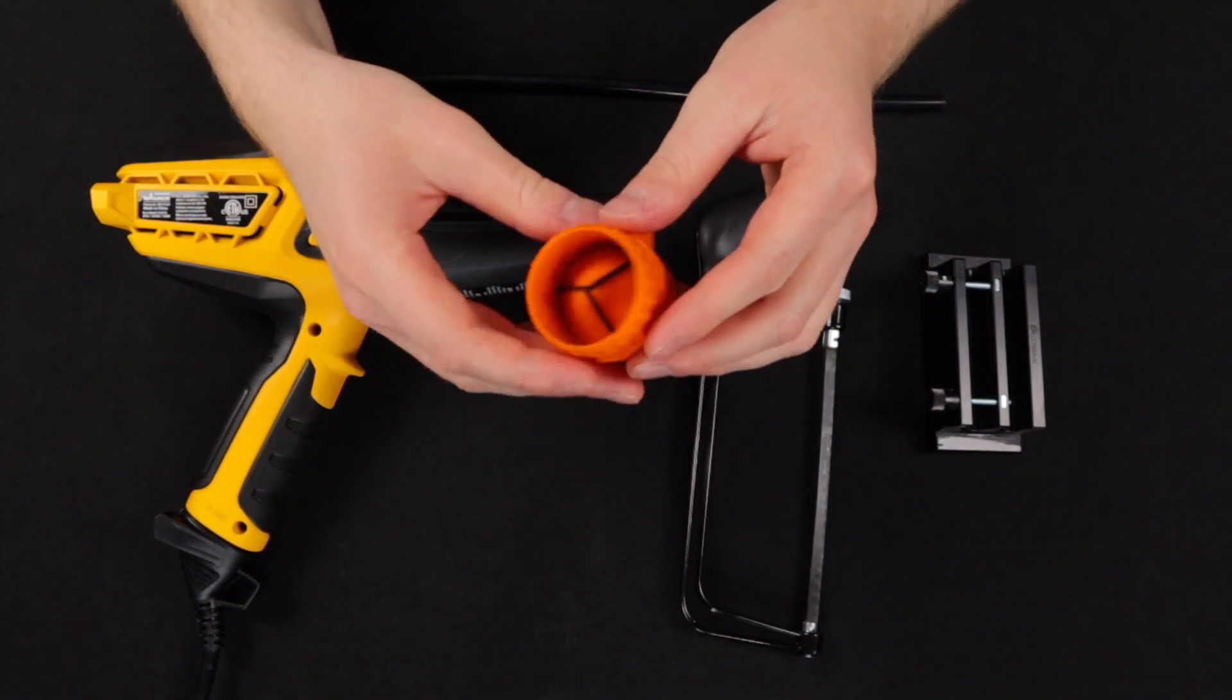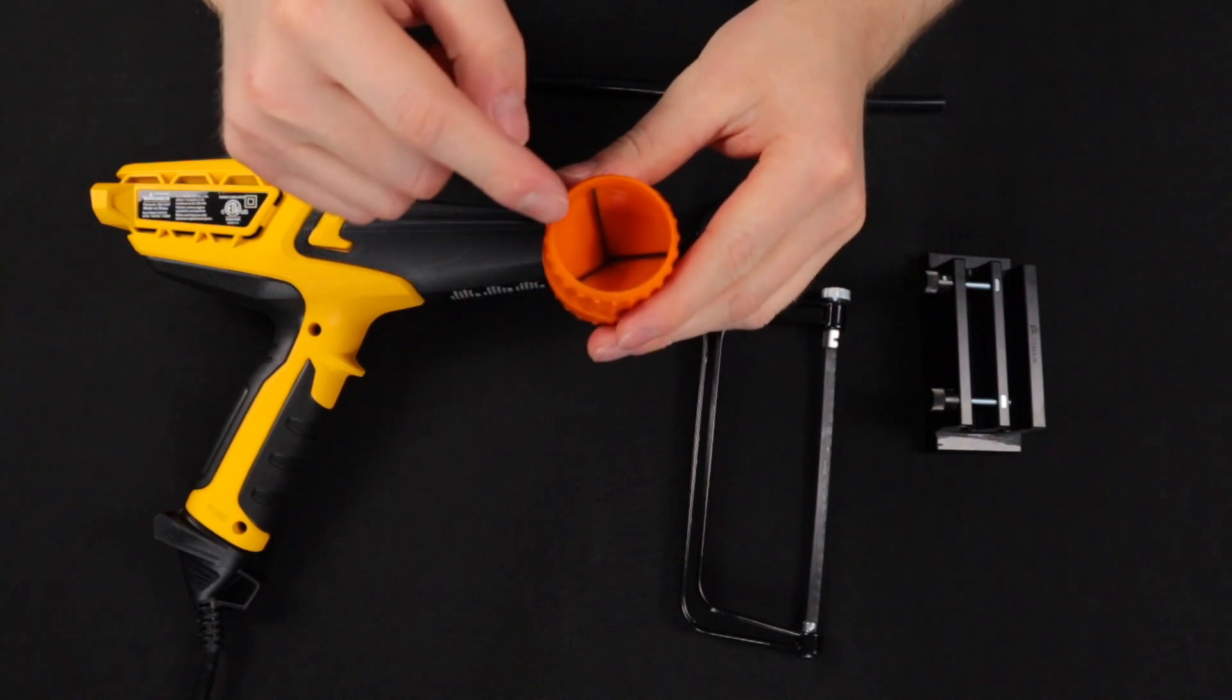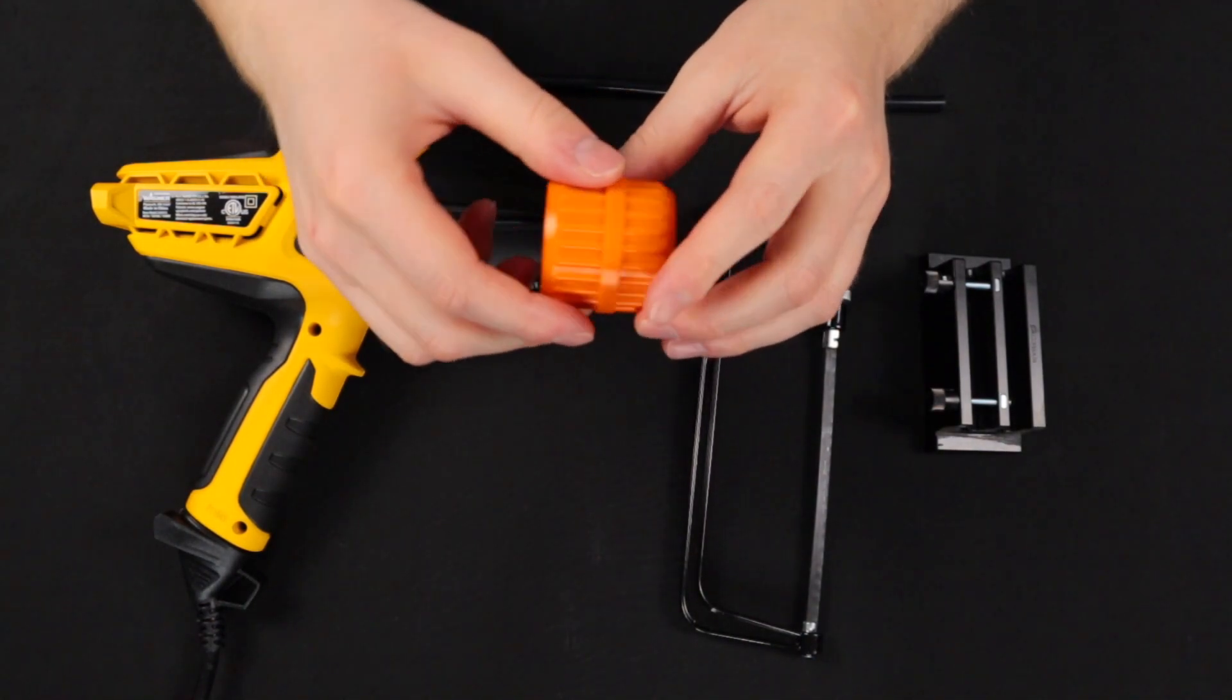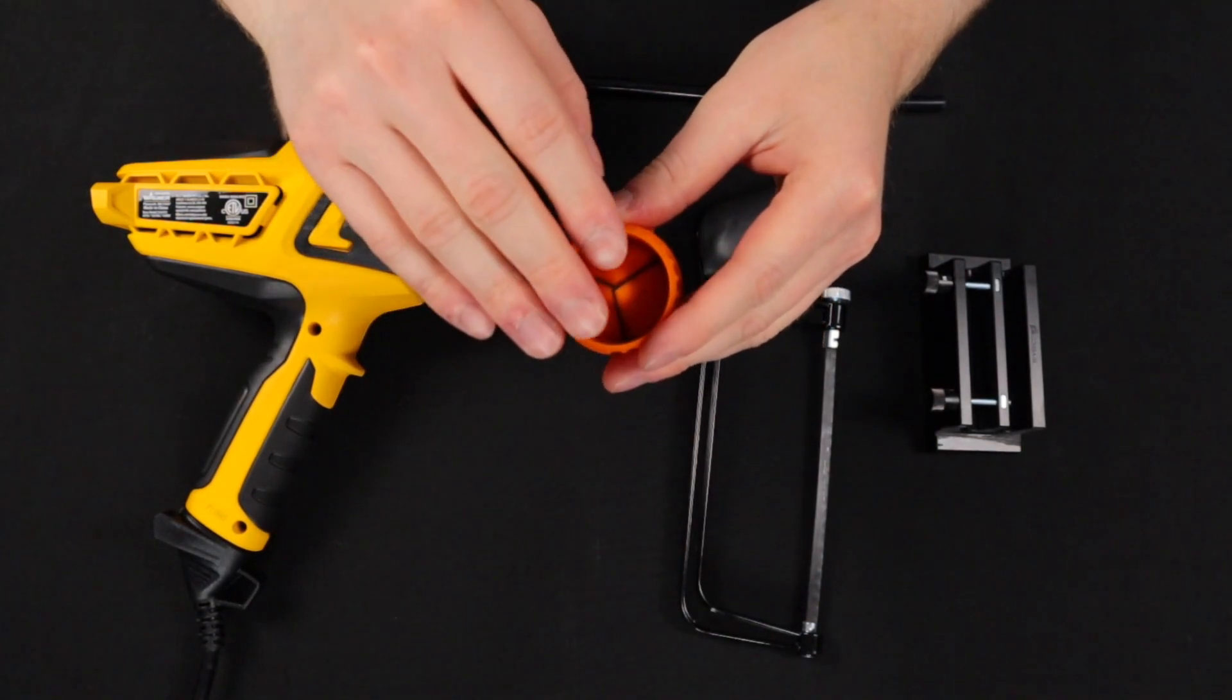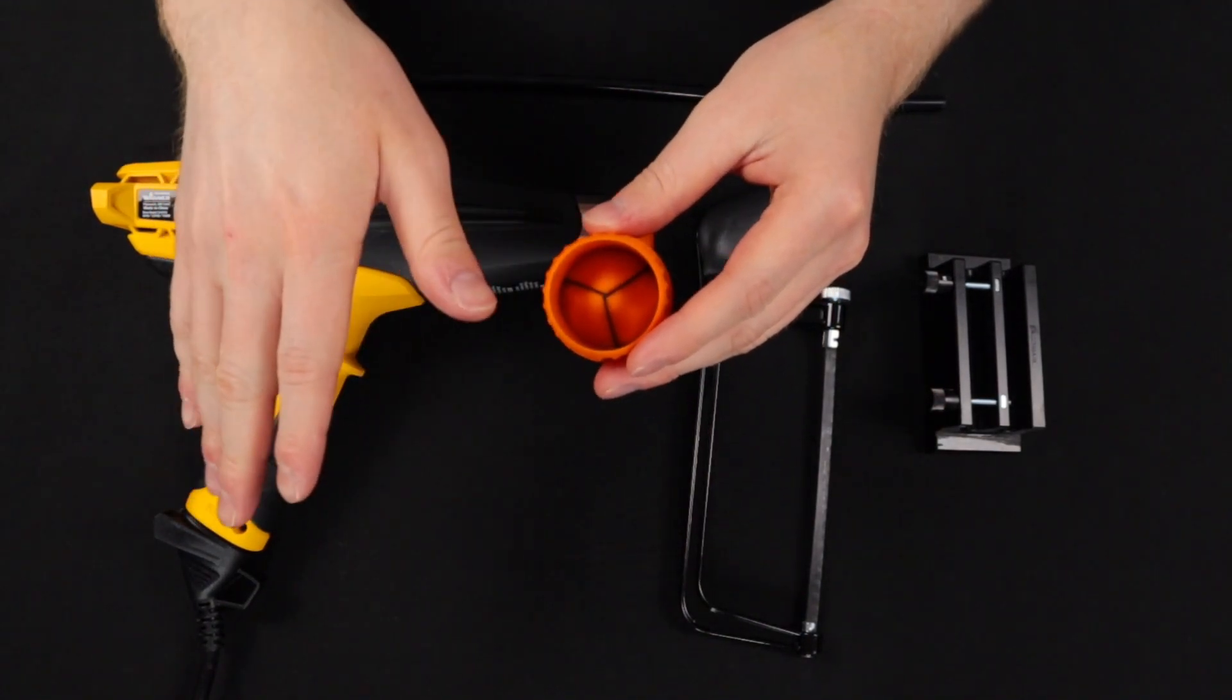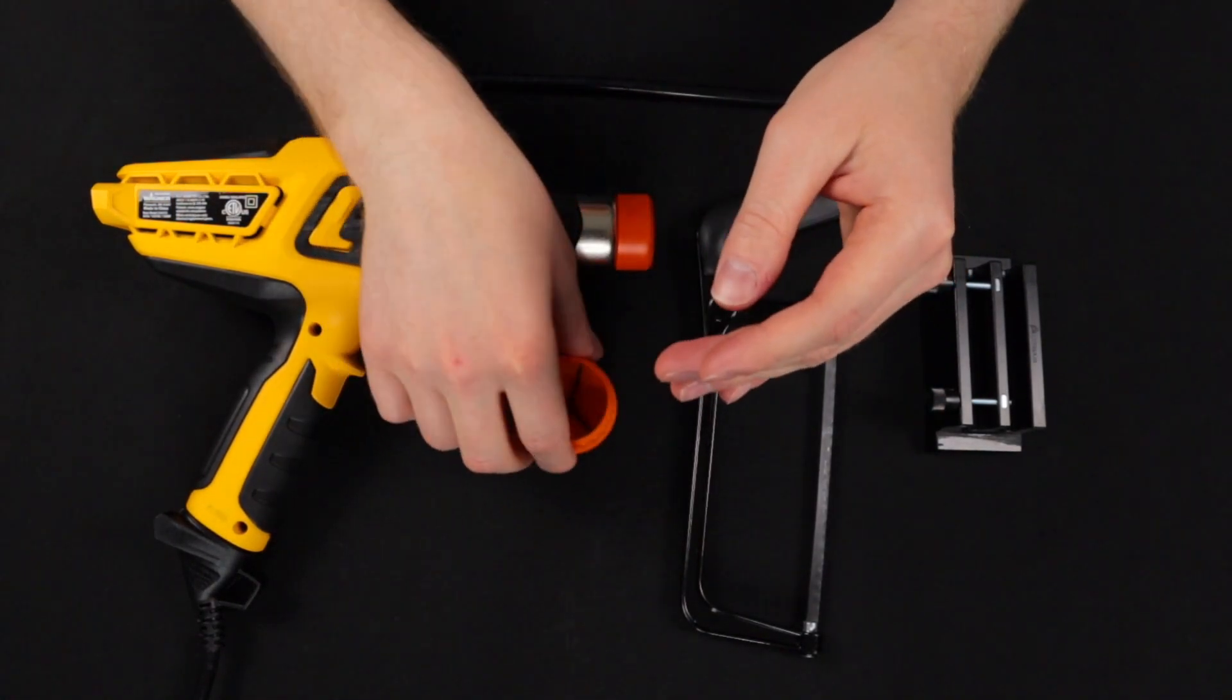Here we have a deburring tool as you can deburr the inside as well as the outside of hard tubing. You can use this with either PETG or PMMA. This will prevent the tubing from putting cuts into any of your o-rings and causing any leaks. So extremely important tool right here.